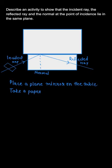What we are doing here is we will take a mirror and keep it normal to the table. Now we will take another piece of paper and make a small hole into it. The light will be allowed to pass through this hole.